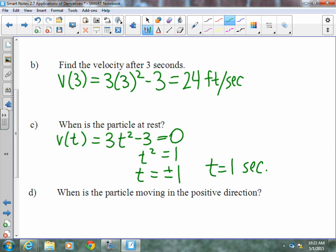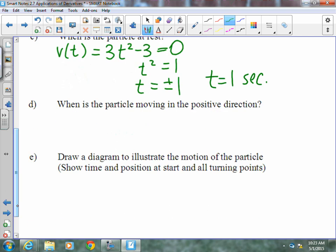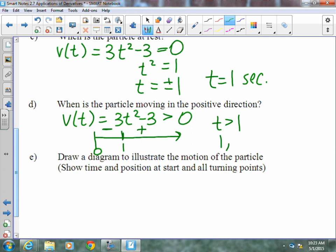When is the particle moving in the positive direction? Part D is when v(t), which is 3t² - 3, is greater than zero. We know time starts at zero. We know that it's equal to zero at one, so we're going to have to check some critical numbers. If we plug in 0.5, we're going to get a negative value. If we plug in a 2, we're going to get a positive value. So, when is this particle moving in the positive direction? That would be when t is greater than 1, or from 1 to infinity.